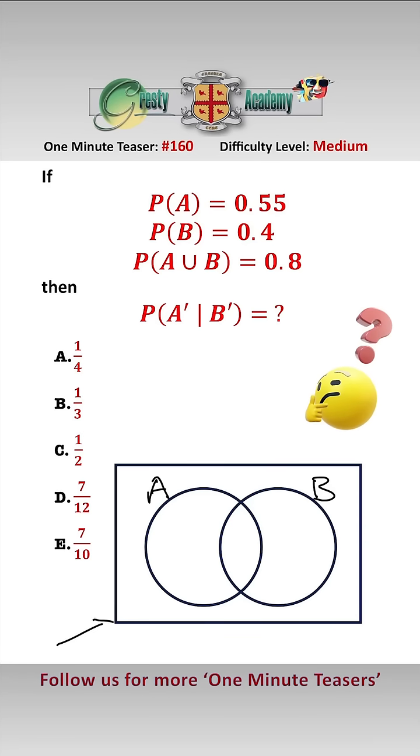For questions like this, I turn to our trusty friend the Venn diagram. If the probability of A or B is 0.8, then the probability of not A and not B is 1 minus 0.8, which is 0.2, which fits here on the Venn diagram.